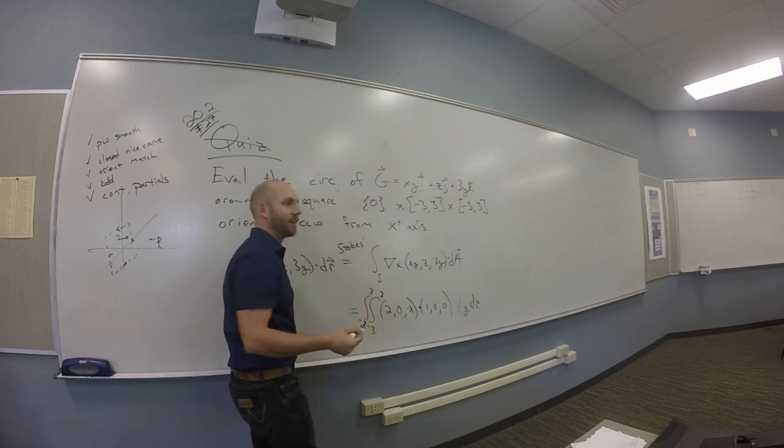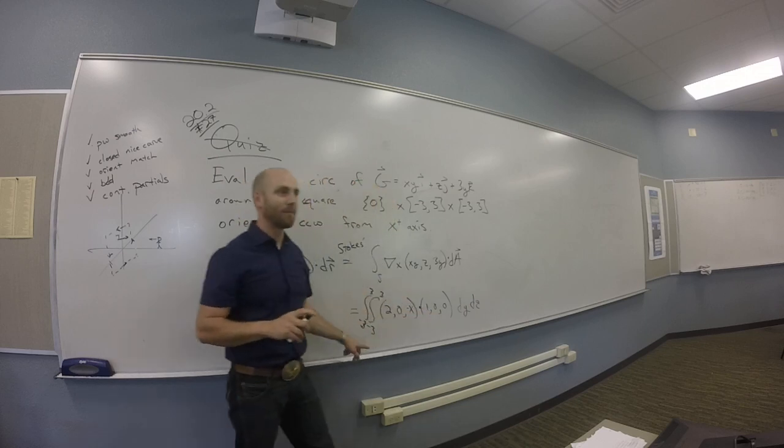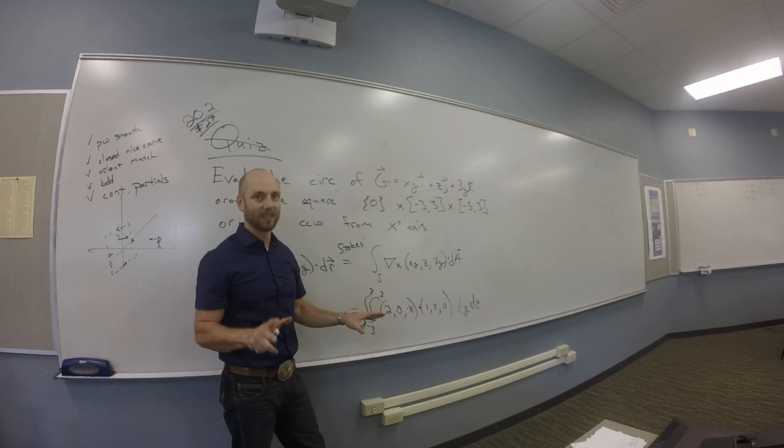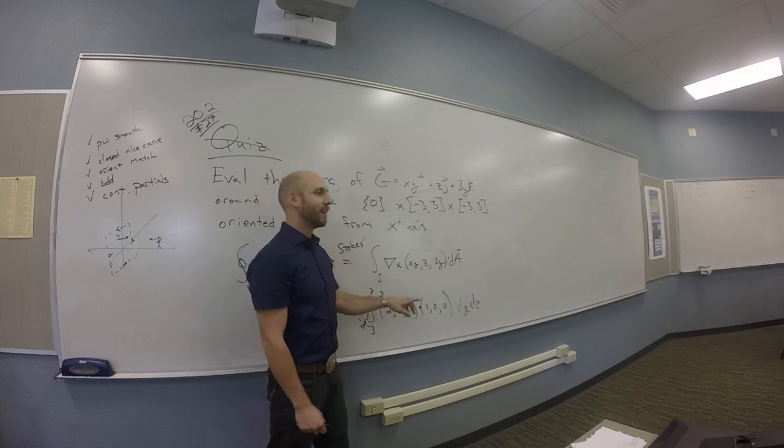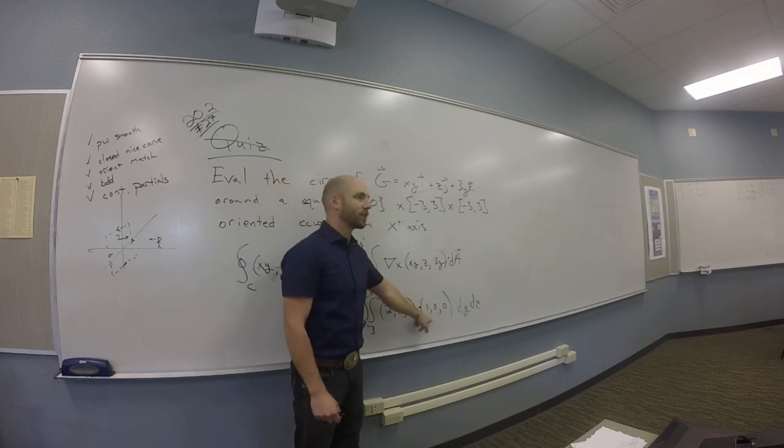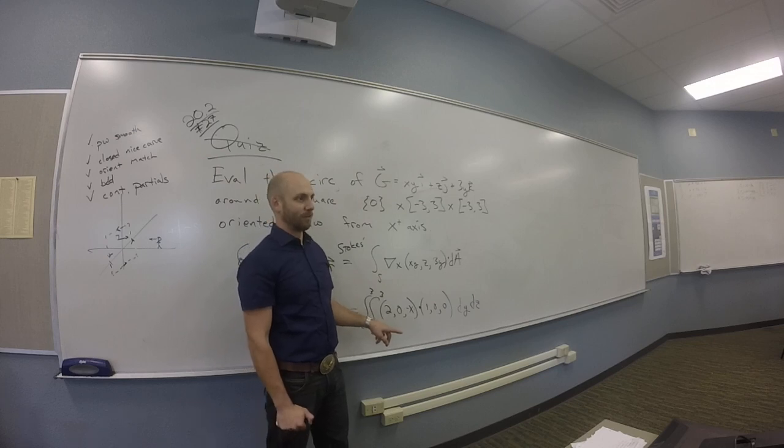And really you should check, right, that this is the right normal to go with that parameterization. And it is. Really you should just think about it for a second. Say your unit normal that you've created actually goes with the parameterization, right? Because a different parameterization of that square might have different bounds.